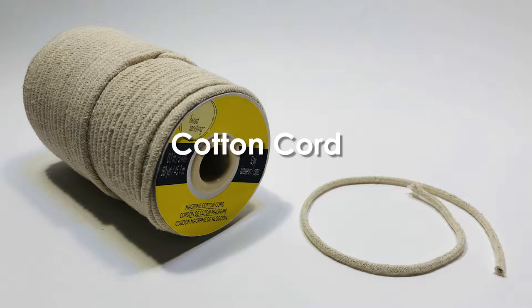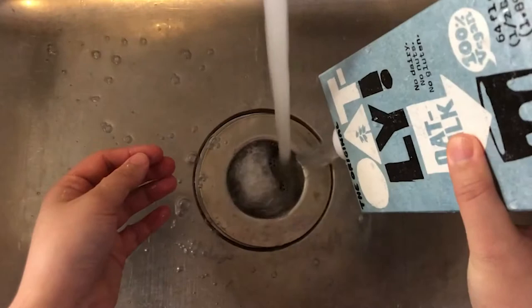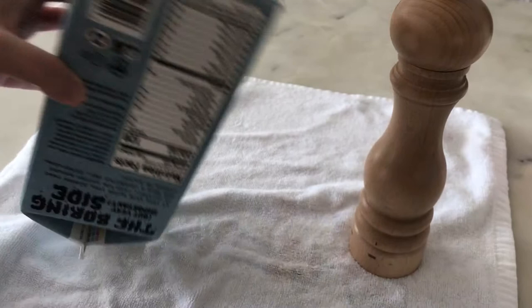Step one: wash out your favorite milk carton with some soap and water, then prop it up to dry so that all the water drains out.